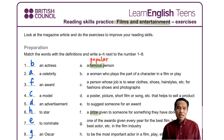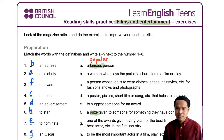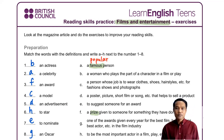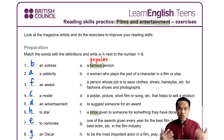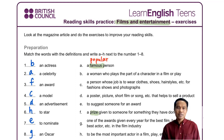Number three: an award. An award is a prize — they have the same meaning. An award or prize is given to someone for something that they have done well. Number four: a model. A model is a person whose job is to wear clothes chosen by designers, especially for photos.